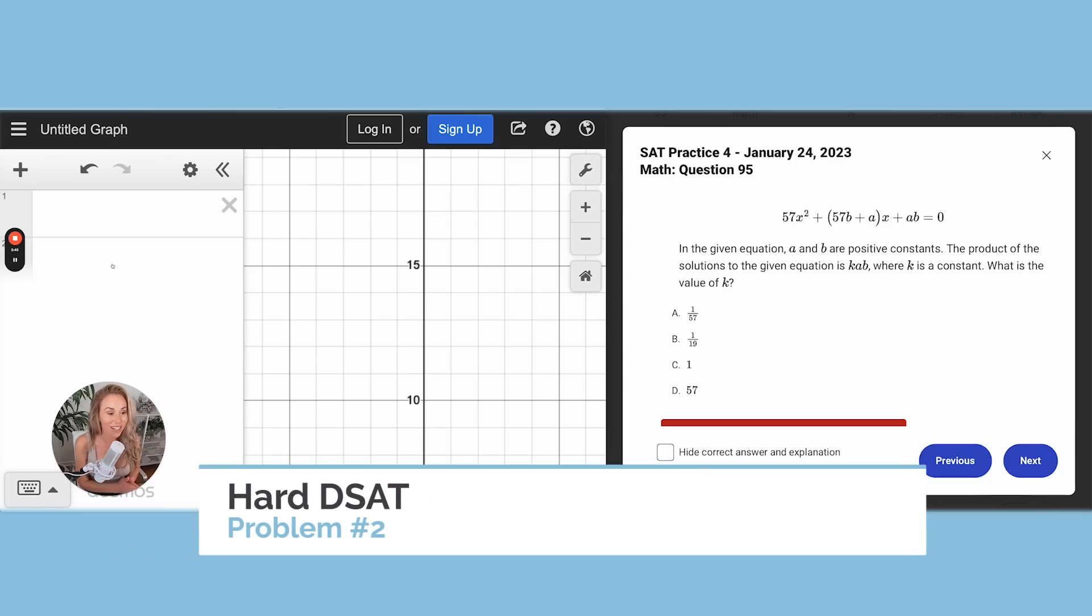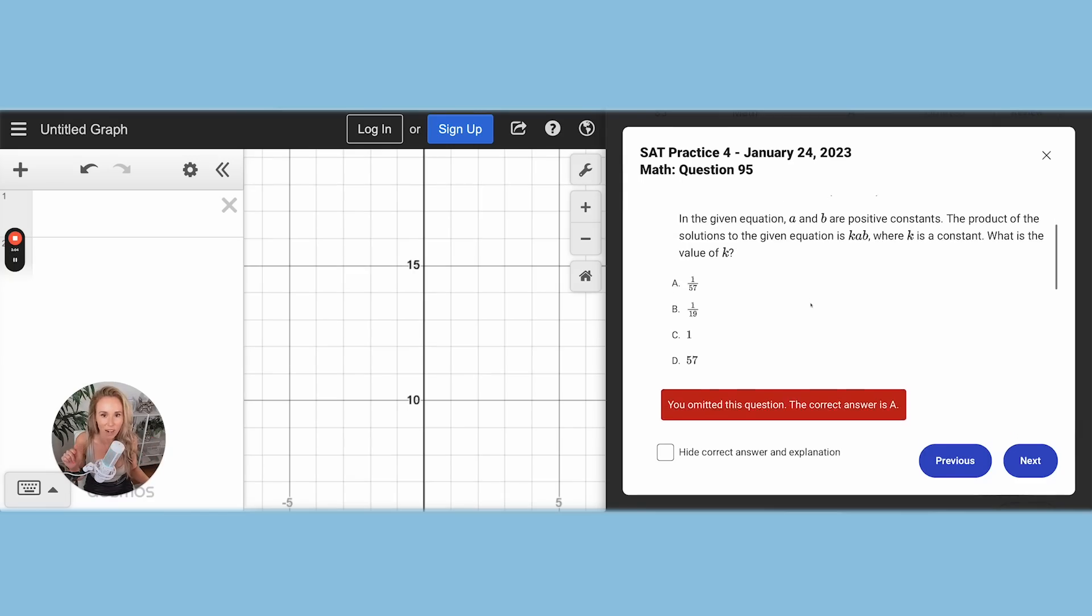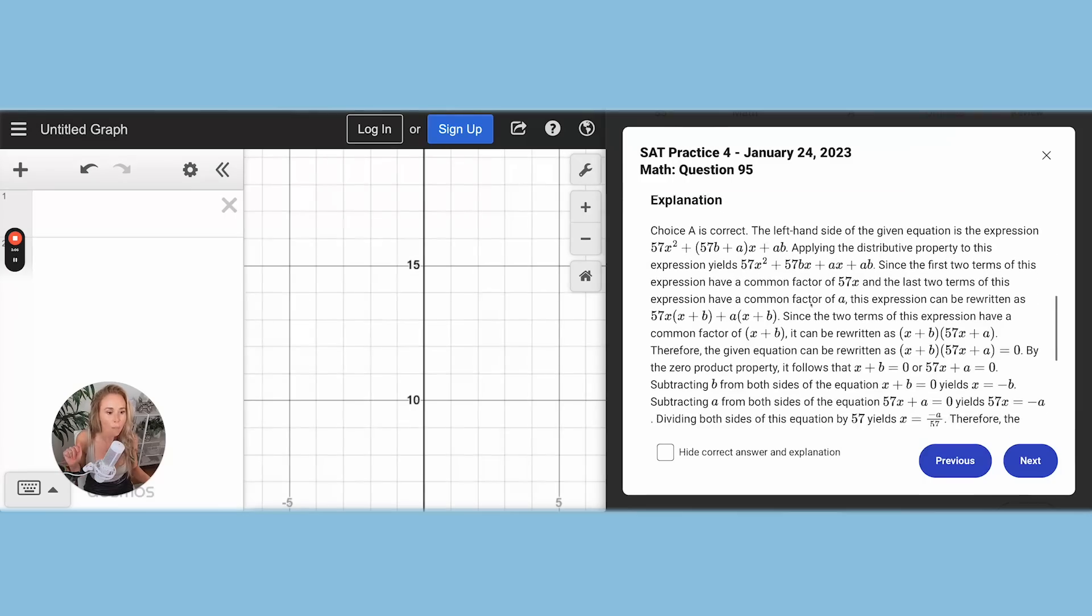All right, this next one has a couple constants in it, an A and a B, and it says the product of the solutions to the given equation is k times a times b, where k is a constant. Well, I already know that that's a quadratic because our highest exponent is squared. So there should be two solutions crossing the x-axis. When we graph it, we're going to look for that.